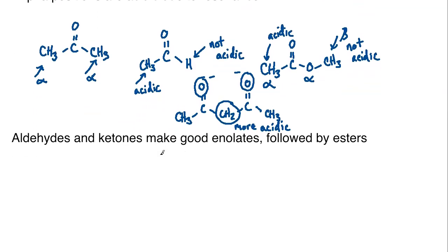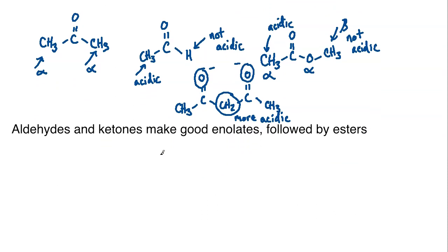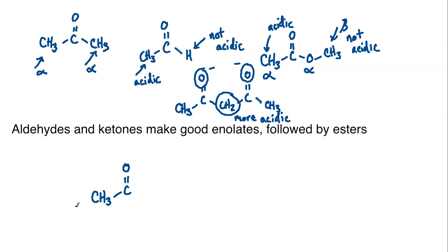Speaking of aldehydes, ketones, and esters, here's a comparison: aldehydes and ketones make good enolates, followed by esters. Aldehydes are the best — sterically speaking they tend to be more reactive, and there are hyperconjugation arguments for their reactivity as electrophiles as well. Aldehydes are usually around a pKa of about 17, whereas ketones are around 19 to 20. Esters have a pKa of roughly 25, depending on what other groups might be around.